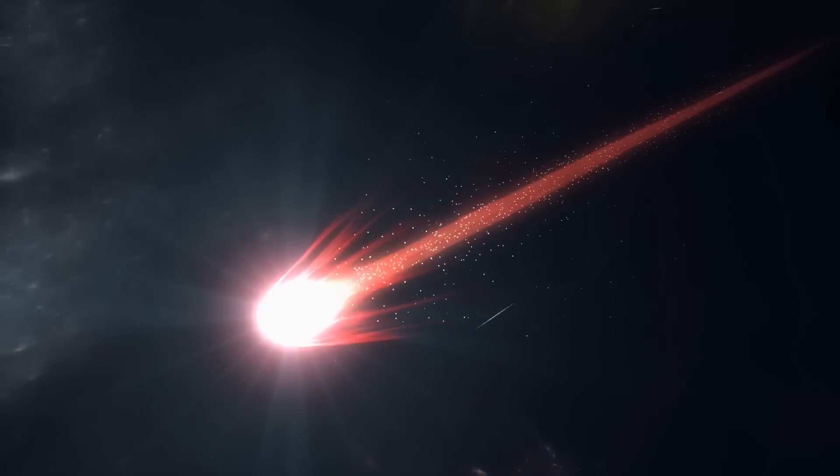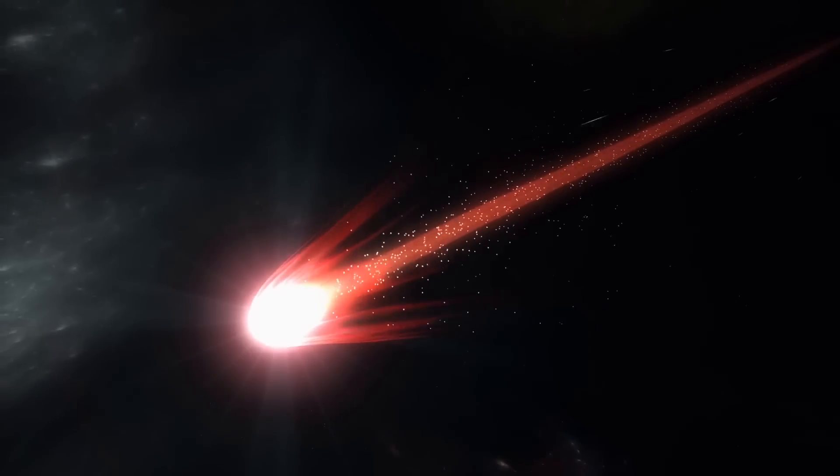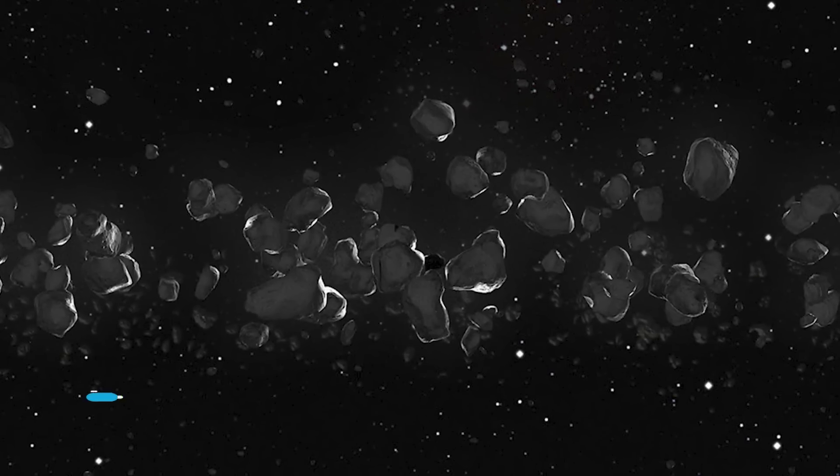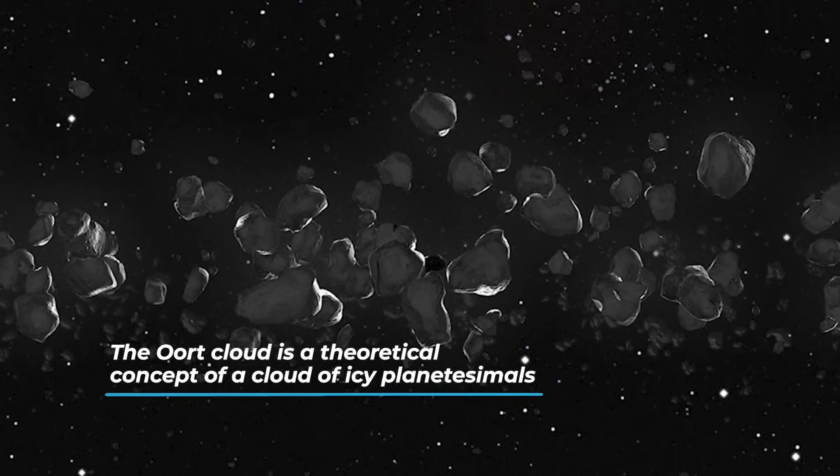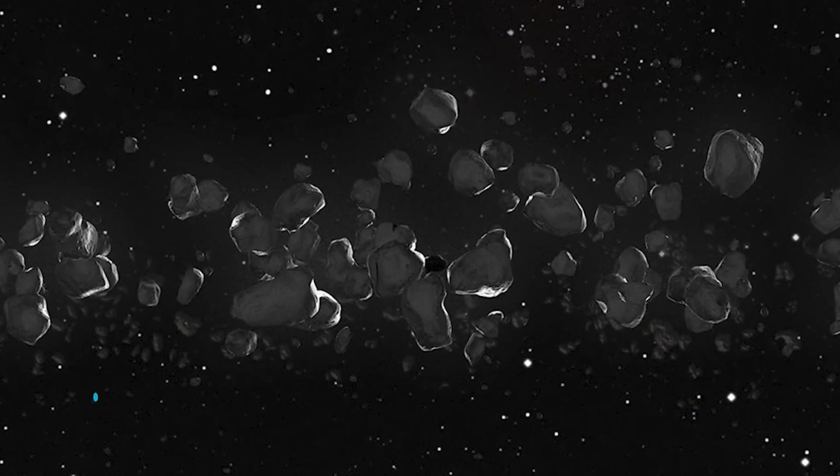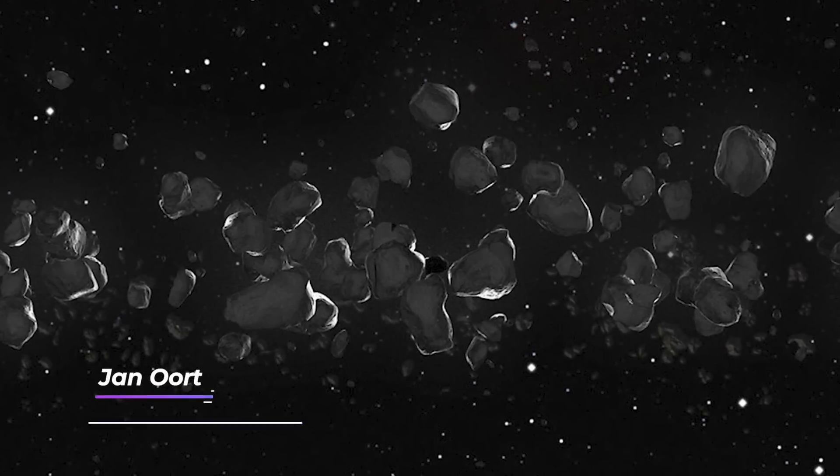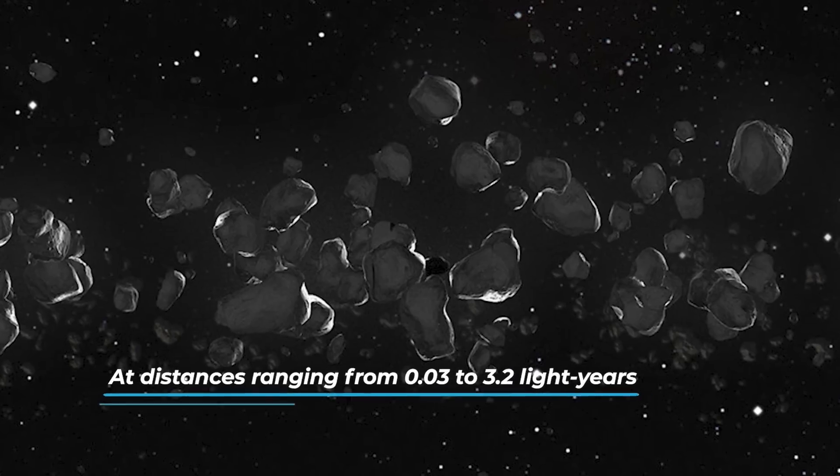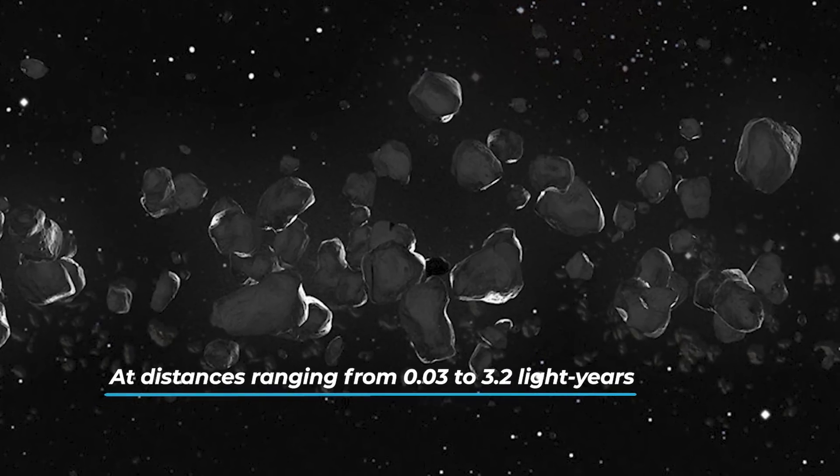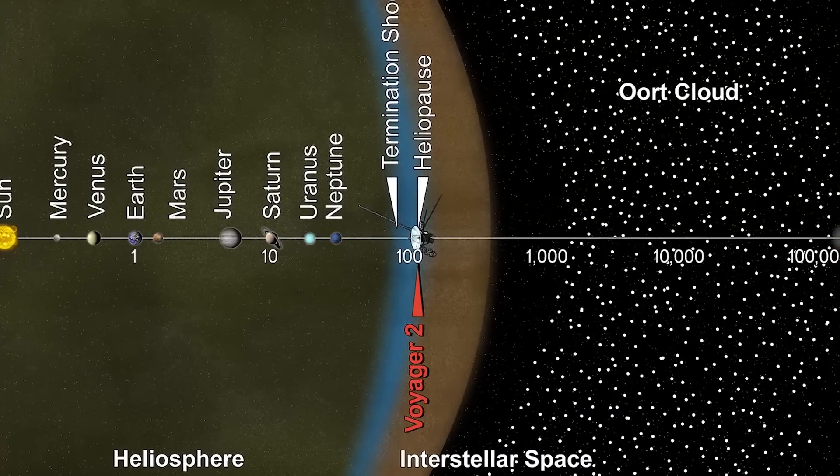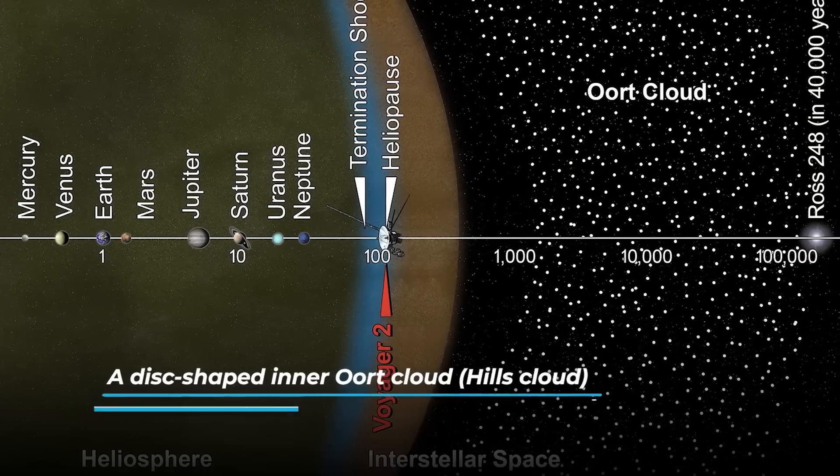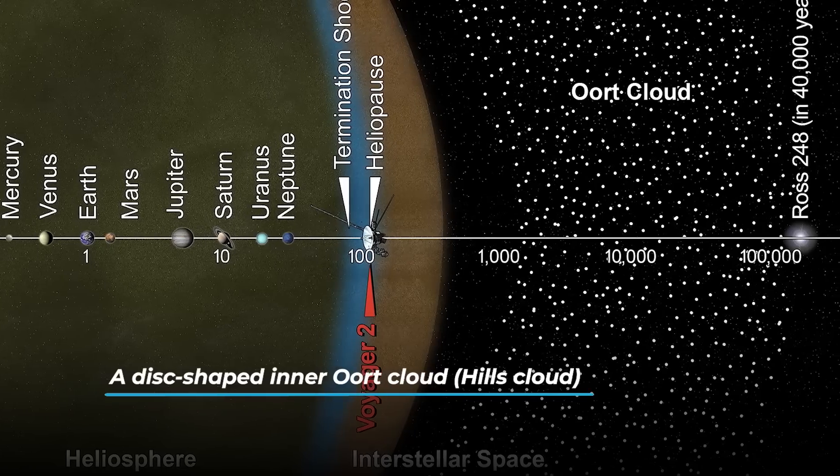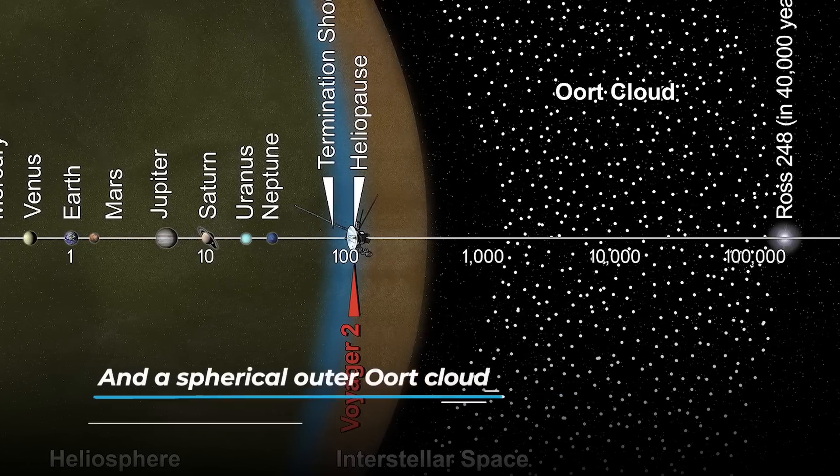A giant comet coming from the Oort cloud is coming towards us. The Oort cloud is a theoretical concept of a cloud of icy planetesimals. It was described for the first time by famous astronomer Jan Oort. He proposed the clouds surrounding the sun at distances ranging from 0.03 to 3.2 light-years. To date, we know Oort's cloud is divided into two regions, a dish-shaped inner Oort cloud that's called Hill's cloud and a spherical outer Oort cloud.